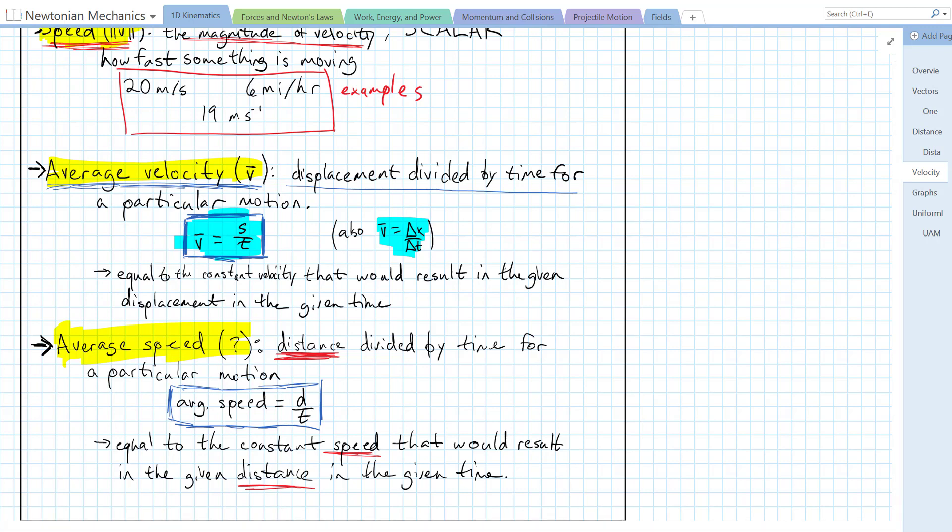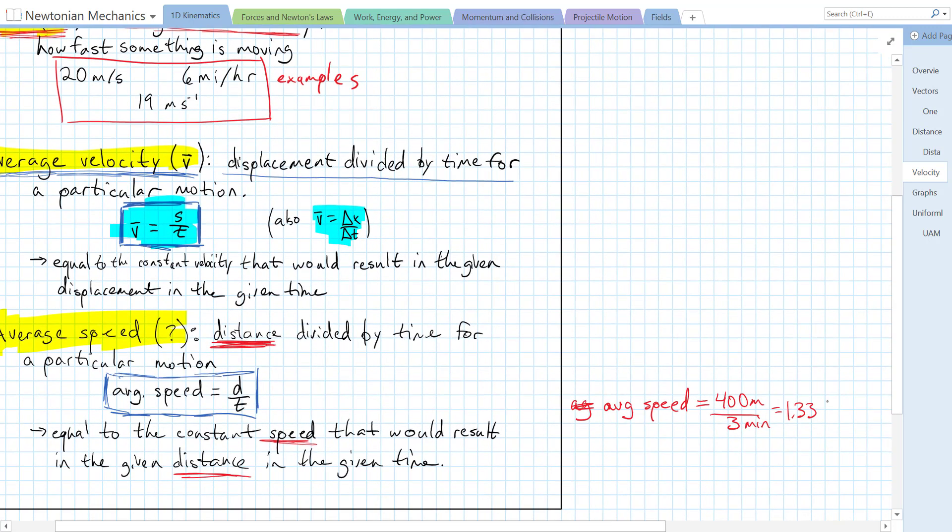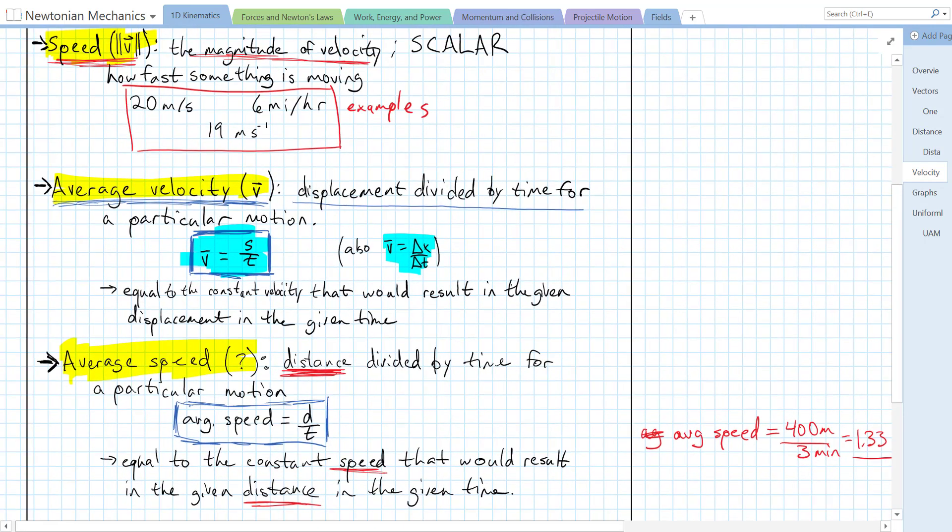So if I were going 400 meters, went around a 400-meter track in three minutes, then my average speed, I'm going to do it off to the right here, average speed is going to be equal to 400 meters over three minutes. And that's going to be about 1.33, I'm running out of space, meters per minute.